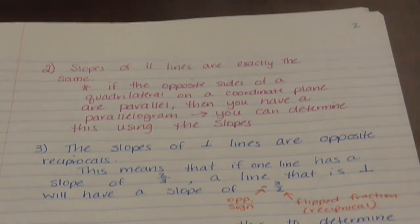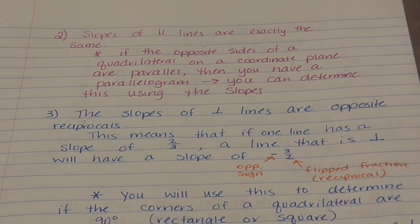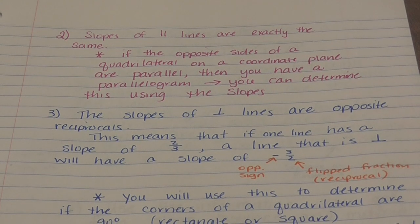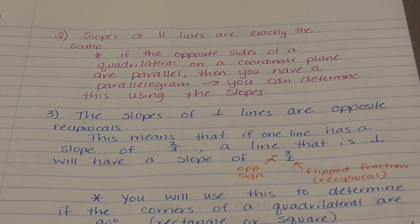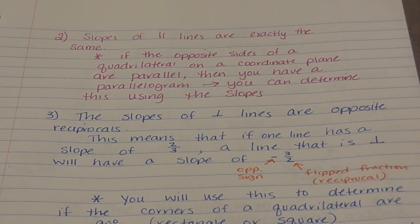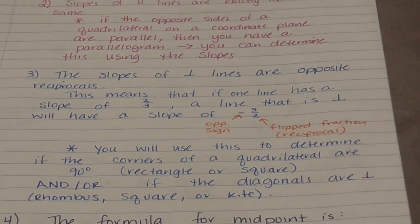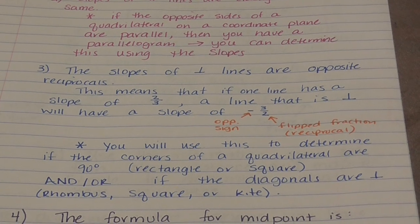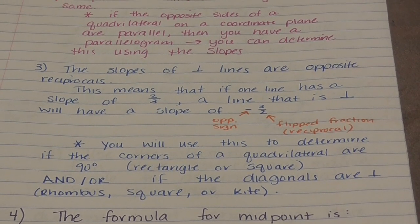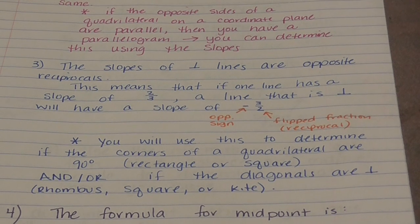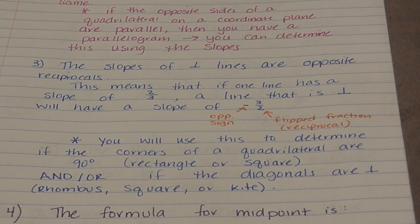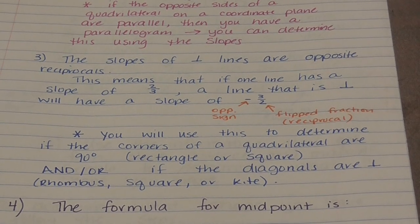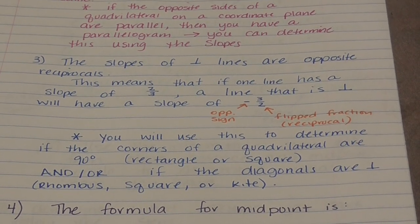Slopes of perpendicular lines are opposite reciprocals. If a line has a slope of two-thirds, the line that's perpendicular will have a slope of negative three-halves — the opposite sign and the fraction is flipped. You use this to determine whether the corners of a quadrilateral are 90 degrees or if the diagonals are perpendicular. If every consecutive slope is the opposite reciprocal of the one before it, those corners all meet at 90-degree angles, meaning you have a rectangle or a square.